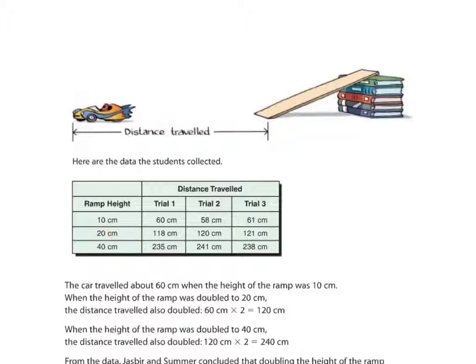At 20 cm, which is double the height. Trial 1, 118 cm. Trial 2, 120 cm. Trial 3, 121 cm. So, again, about 120 cm. Is that doubled? Well, 60 times 2 is 120 cm. So, at this point, it looks like their hypothesis is correct. Let's look at 40 cm.